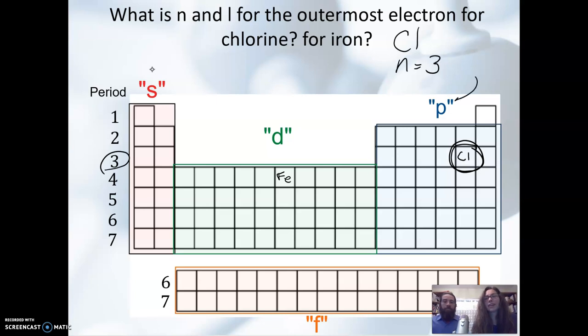It's in the P block. P block is when L, if you kind of forget, S, P, D, F. So we have L equals 0, L equals 1, L equals 2 here for D, and L equals 3 down here for F. So if it's in the P block, L equals 1.